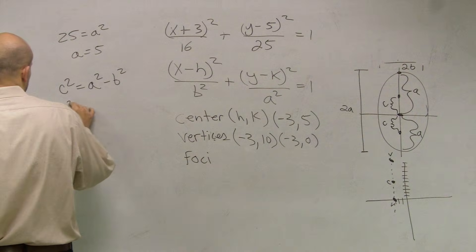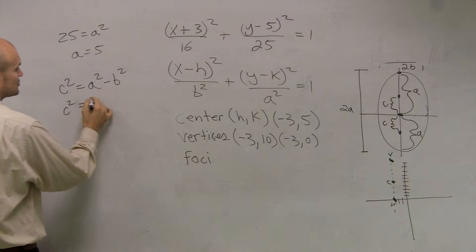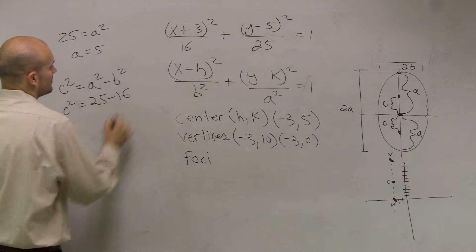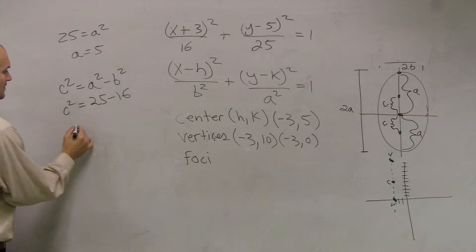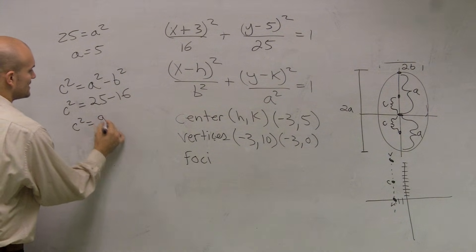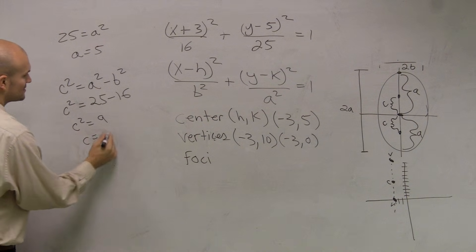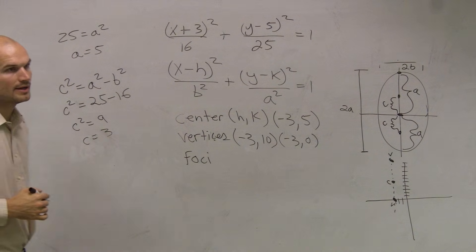So I have c squared equals a squared, which is 25, minus b squared, which is 16. c squared equals 9. c equals 3, right?